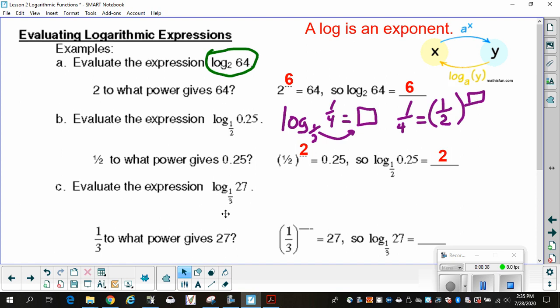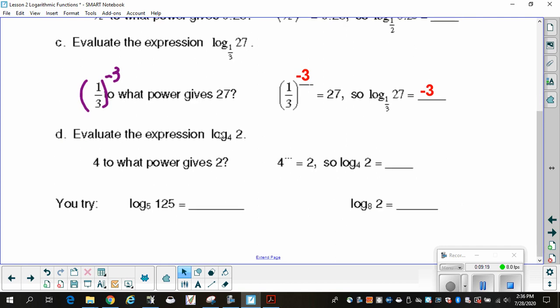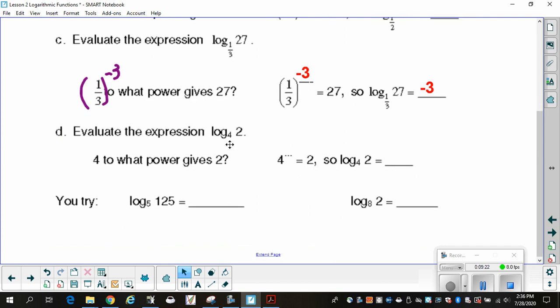But, evaluating the expression, log base 1/3 of 27. I need to think about 1/3 to what power gives 27. Well, first off, I want it to be a negative. So, the first thing I do is say, I'm going to make this a negative exponent, because now this is going to flip the 3 on top. Now, 3 to what power is 27? And, that's 3. So, thinking through it like that, I get 1/3 raised to the negative 3 is 27. So, log base 1/3 of 27 is negative 3. Remember, the negative here says that I'm going to do the reciprocal. It does not mean that 1/3 is negative.